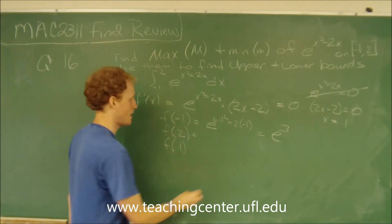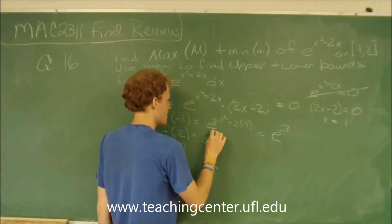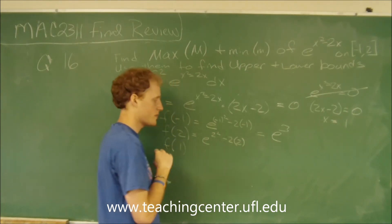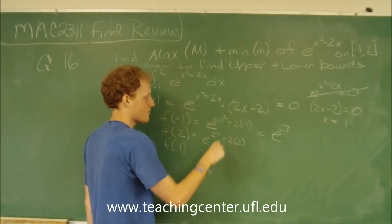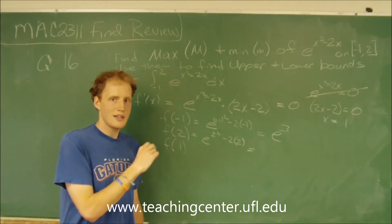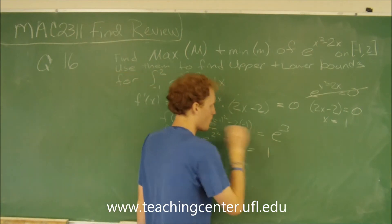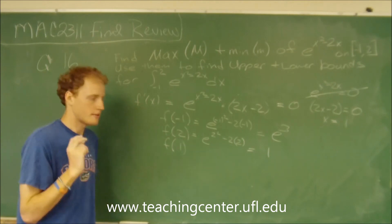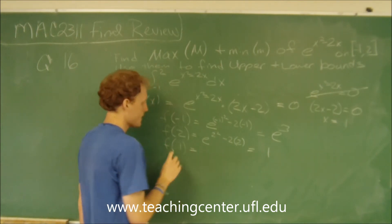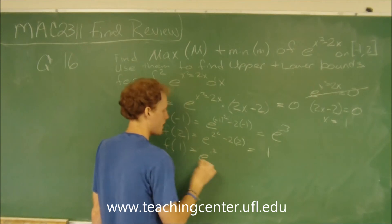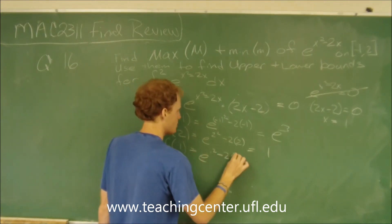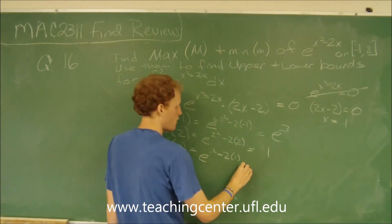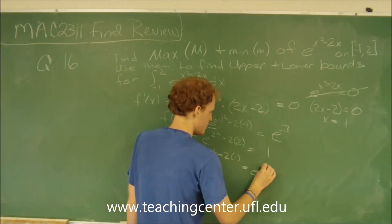Let's plug in 2. We get e to the 2 squared minus 2 times 2, which is 4 minus 4 equals 0, so e to the 0 power is 1. And finally, the function value at the critical number: we get e to the 1 squared minus 2 times 1, that's 1 minus 2, giving us e to the negative 1.